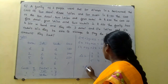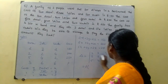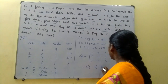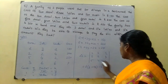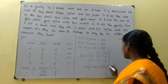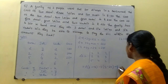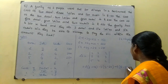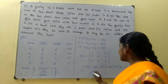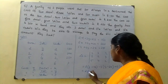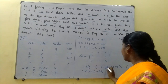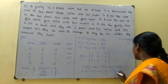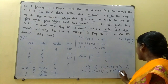Expanding along row 1: 2 into (2×2 − 4×4) minus 3 into (2×2 − 4×5) plus 2 into (2×4 − 2×5). So: 2 into (4 − 16) = 2 into (−12). Minus 3 into (4 − 20) = minus 3 into (−16). Plus 2 into (8 − 10) = plus 2 into (−2).